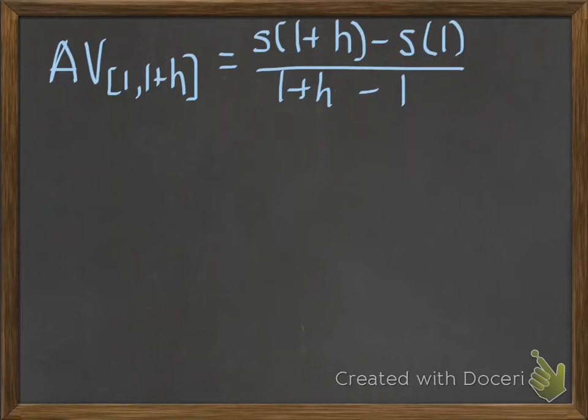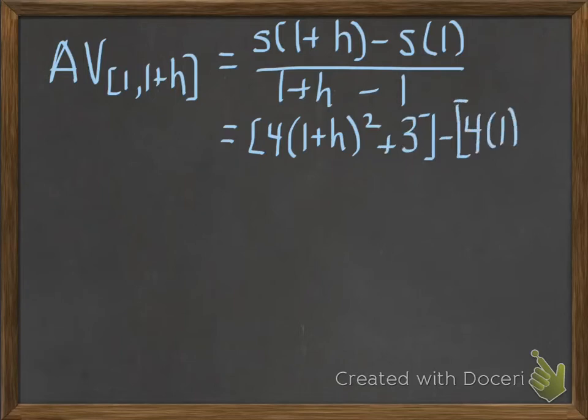Now I need to evaluate those functions at the point 1 plus h and at the point 1. So I do that, and I get 4 times (1+h)² plus 3 minus 4 times 1² plus 3 divided by h because 1 plus h minus 1 is just h. Now I'm going to do some simplification here. What you should do is simplify yourself and then check back in with me to make sure we agree.